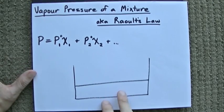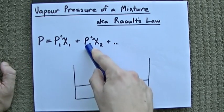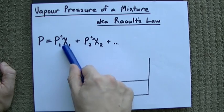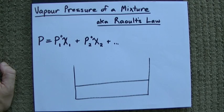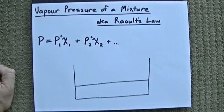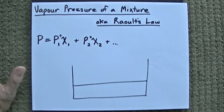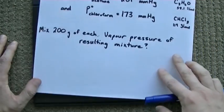All you have to do is take the vapor pressure of each pure substance, multiply it by the mole fraction of each substance, and then you just add them all together. Actually, let's solve this problem first, and then I'll show you why it works.